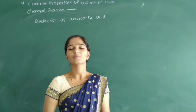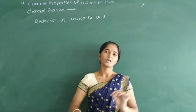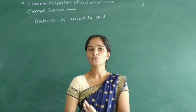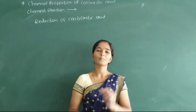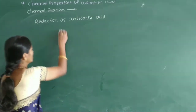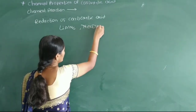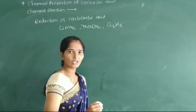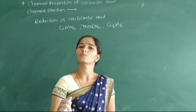Now we will study the last chemical reaction of carboxylic acid — that is, the reduction of carboxylic acid. Reduction means addition of hydrogen into the acid to form the corresponding primary alcohol. This reaction is used for preparation of primary alcohol using a strongly reducing agent such as lithium aluminium hydride (LiAlH4), sodium borohydride (NaBH4), or diborane.